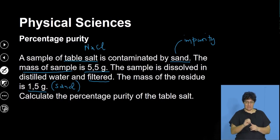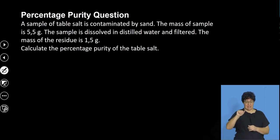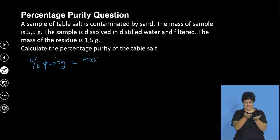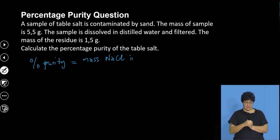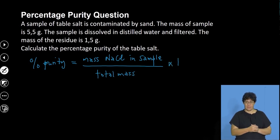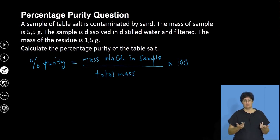To calculate the percentage purity of table salt, we use the formula: percentage purity equals the mass of sodium chloride in the sample divided by the total mass of the sample, multiplied by 100.